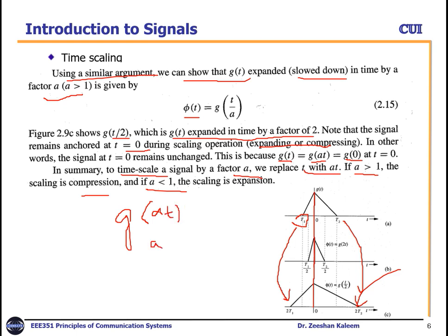When a is greater than 1, the scaling is compression; when a is less than 1, it is expansion. For example, a equals 1/2 (less than 1) gives expansion, while a equals 2 (greater than 1) gives compression. For compression in a tape recording, the playback is faster; for expansion, it plays slowly.